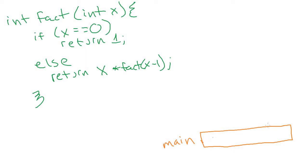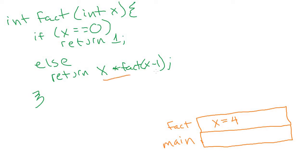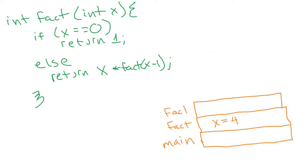Let's see how that works. Inside main, we have a stack frame for main storing all of main's variables. Then we call the fact method with parameter x equal to four. We go into the fact method, check if x equals zero — it's not — so we need to compute x times fact(x minus 1). Before the multiplication, we need to know what fact(x minus 1) is, so it calls the fact method again, pushing another stack frame for fact with x equal to three.